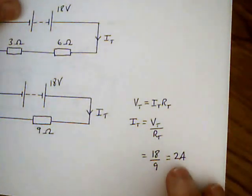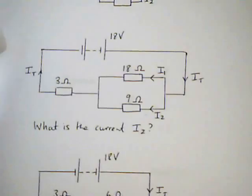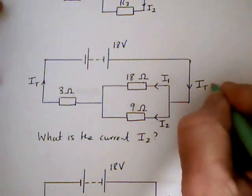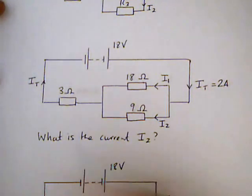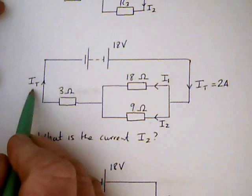So we now know something about the circuit. We can go back now to the circuit we started with, and we now know that we can put equals 2 amps here, and therefore we've got 2 amps here.